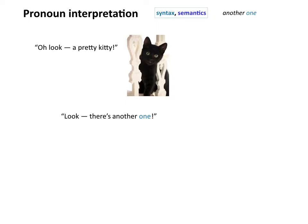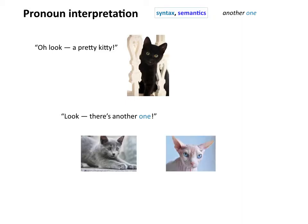Let's talk about pronoun interpretation with respect to the word 'one' in English in this kind of context. I see a kitty and I say 'oh look, a pretty kitty,' and then I turn and see something else and say 'look, there's another one.' Okay, another what? Let's say there are two options: is it another pretty kitty or another kitty?